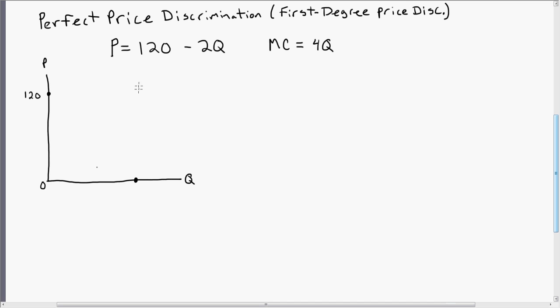To get the horizontal intercept, we set P equal to 0, and you solve for Q. You're going to get 120 divided by 2, or 60. So this is the graph of the firm's demand curve. Label that D.